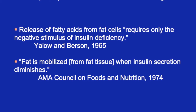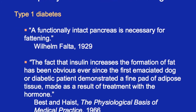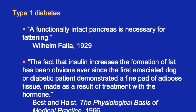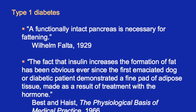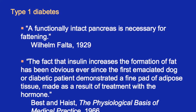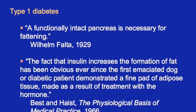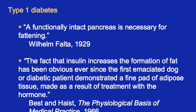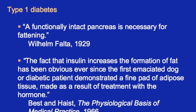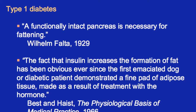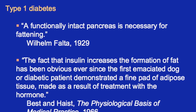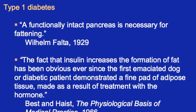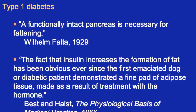In effect, insulin is a fattening hormone. It's been known since the first discovery of insulin — actually even before then. Type 1 diabetics without insulin can't keep fat in their fat tissue; they will die starving and emaciated. As Best of Banting and Best put it in 1966: the fact that insulin increases the formation of fat has been obvious ever since the first emaciated diabetic patient demonstrated a fine pad of adipose tissue made as a result of treatment with the hormone.